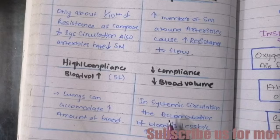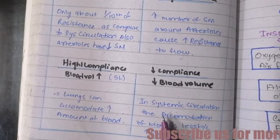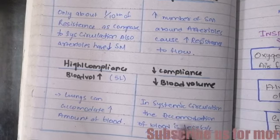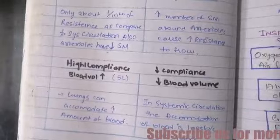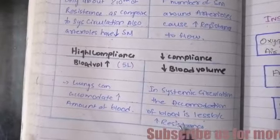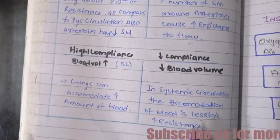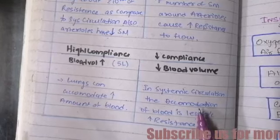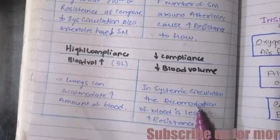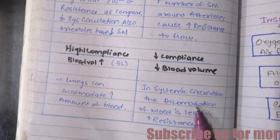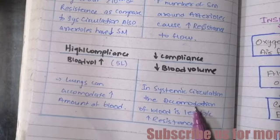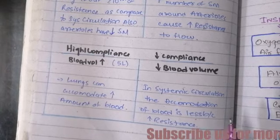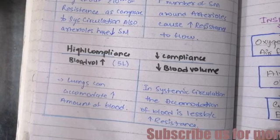That's why the systemic circulatory system has less compliance — less blood volume in the system. In the systemic circulation, accommodation of blood is also reduced because of increased resistance. The increased pressure and resistance decrease blood volume because less blood flows throughout the systems and more returns to the heart. That's why there is decreased compliance in terms of blood volume in systemic circulation.